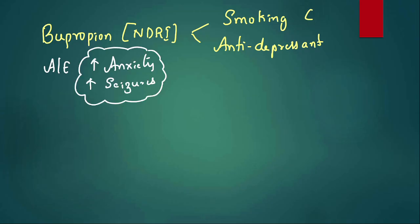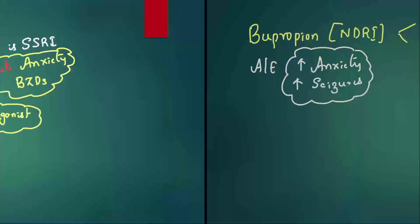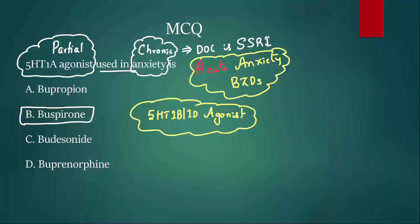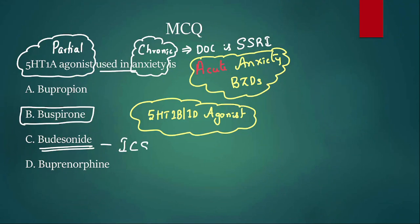The other two options: budesonide — when you become Buddha you have to 'sonide' — is an inhaled corticosteroid used in bronchial asthma prophylaxis.